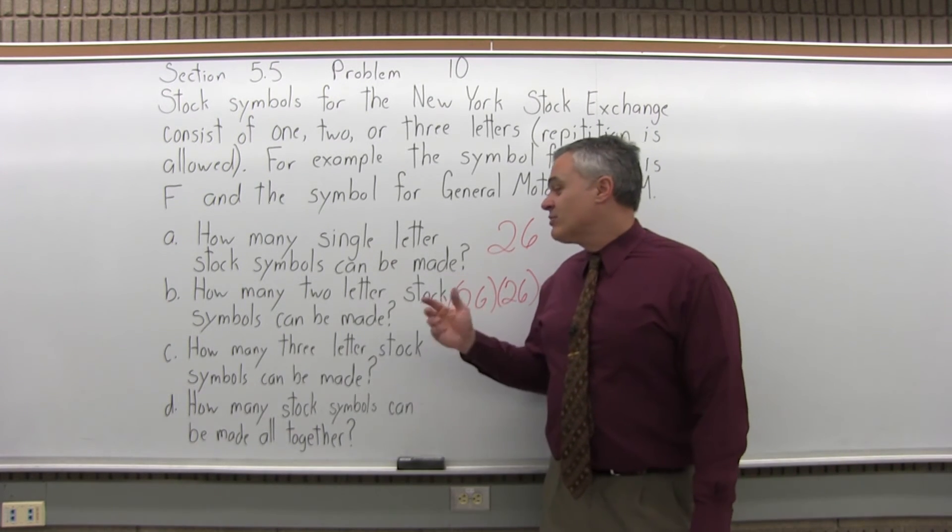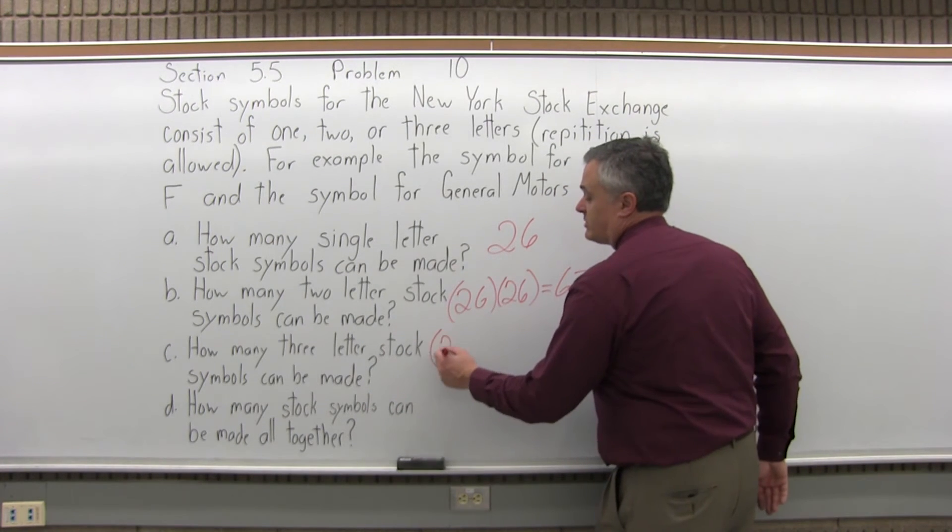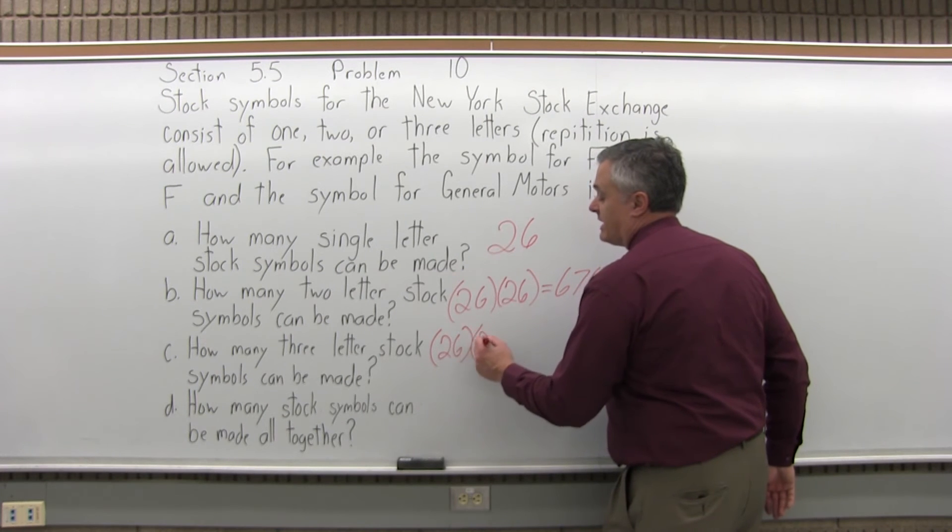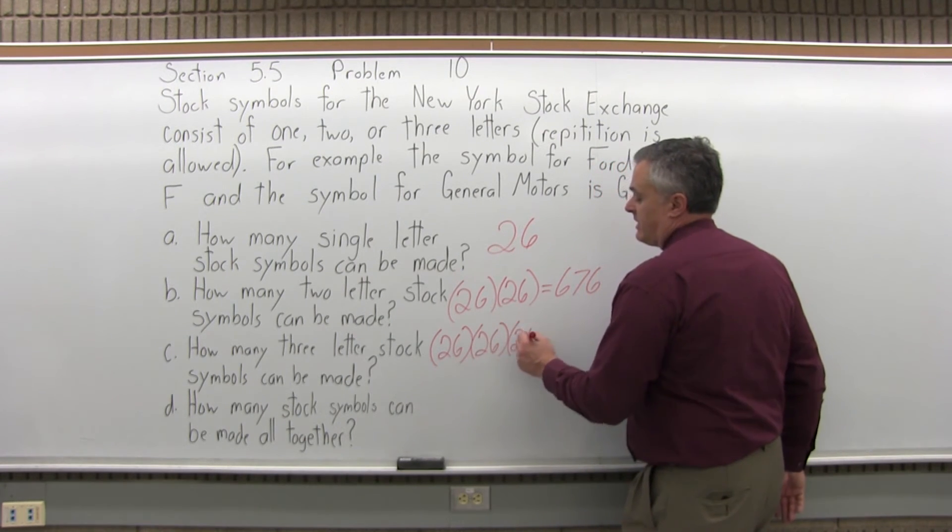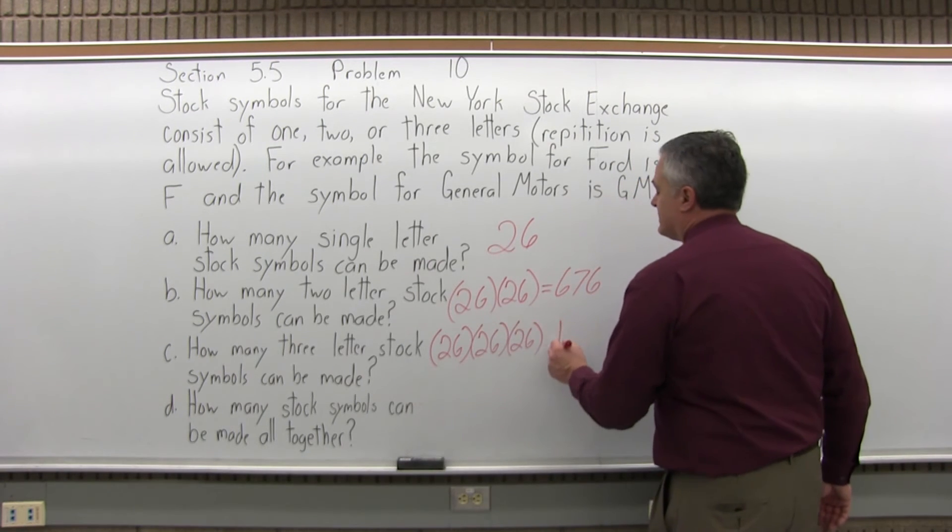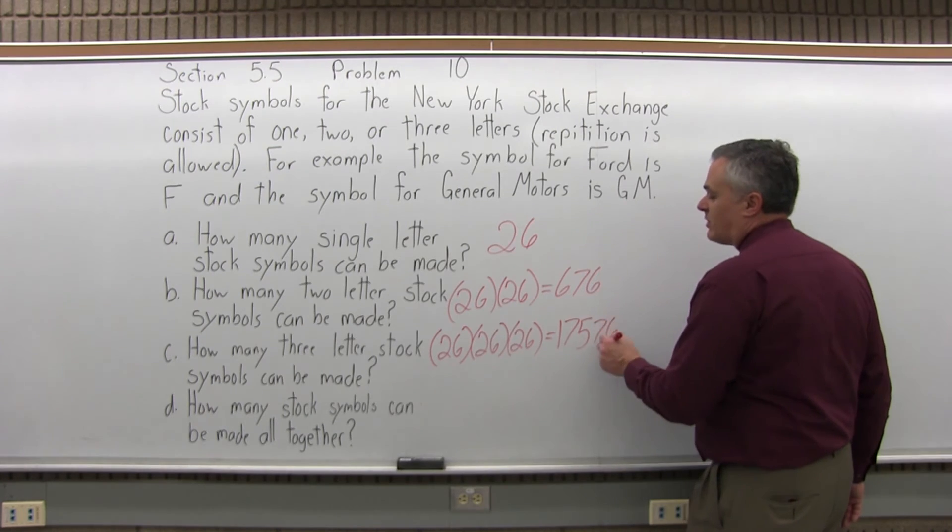How many three-letter stock symbols can be made? So it's the same process, except for three letters, you'd have 26 times itself three times, 26 times 26 times 26, and that would be 17,576 if you multiply it all out.